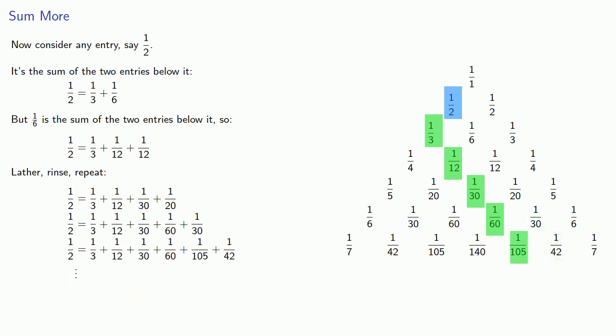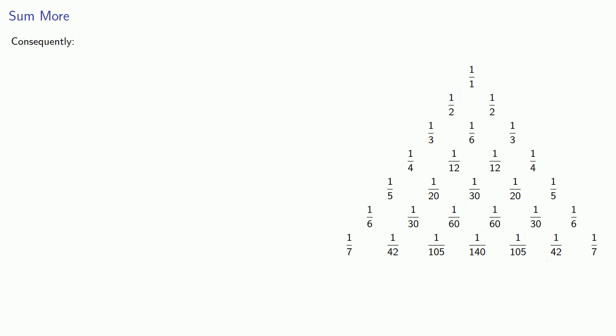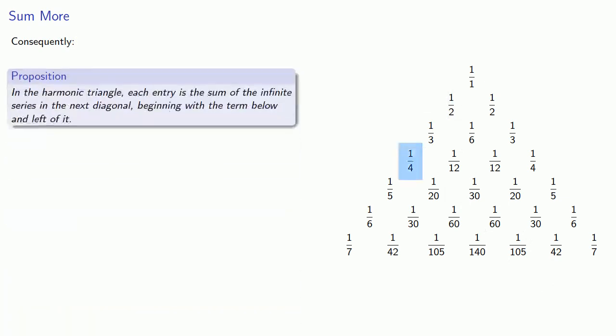And so we see that this entry, 1 half, is the sum of all of the entries along this diagonal. And we can summarize that. In the harmonic triangle, each entry is the sum of the infinite series in the next diagonal, beginning with the term below and to the left of it.